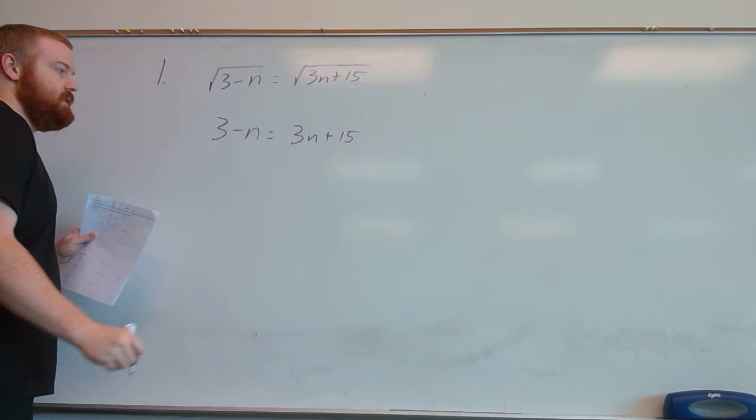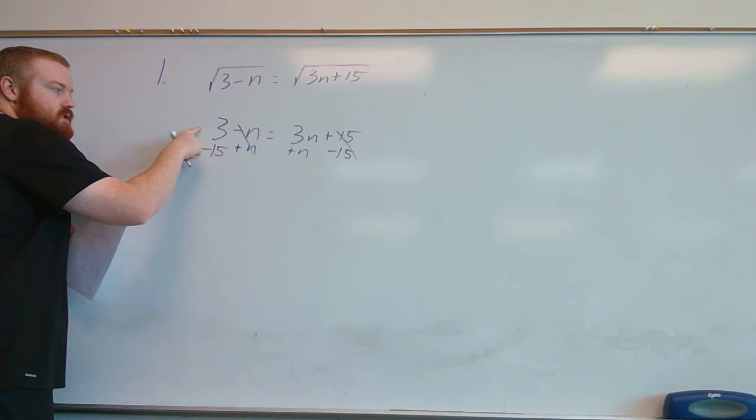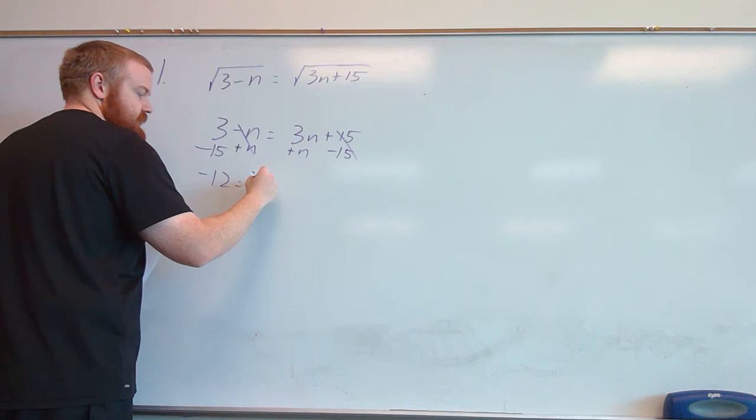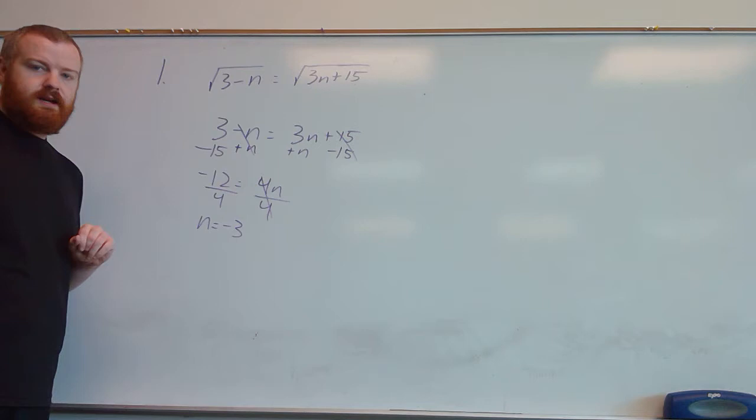Now we just solve for the variable. We get the n's on one side by adding n over, and we get the numbers on the other side by subtracting 15. So we have 3 minus 15 on this side, which is negative 12, and 3n plus n on this side, which is 4n. Then our final step is to divide by 4, so negative 12 divided by 4 gives us negative 3.